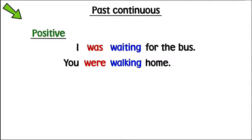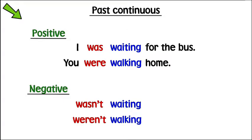We form the past continuous negative with wasn't or weren't and the ing form of the verb.